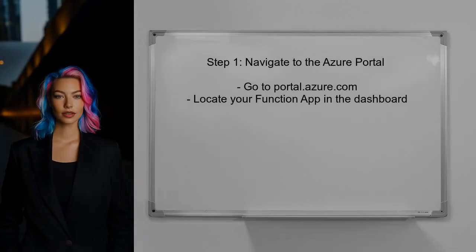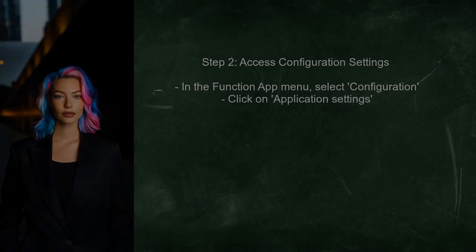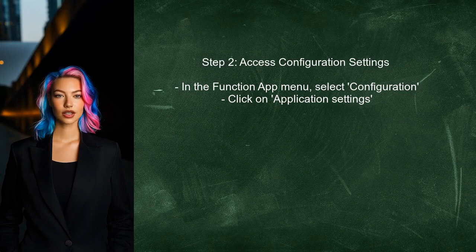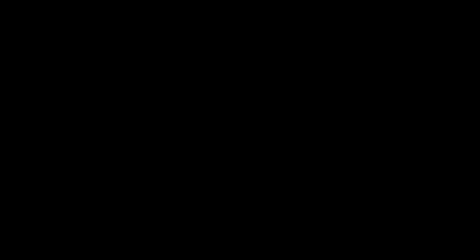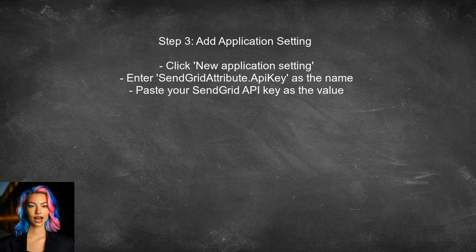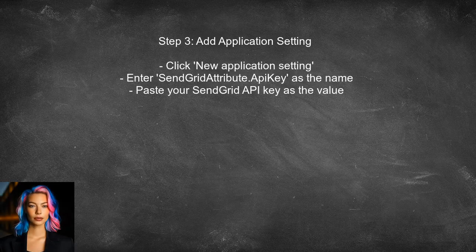To resolve the issue with the SendGrid API key, first navigate to the Azure portal and locate your function app. Next, access the configuration settings for your function app — this is where you can add the SendGrid API key. Then add a new application setting for the SendGrid API key by clicking on the New Application Setting button.